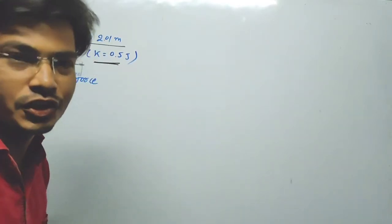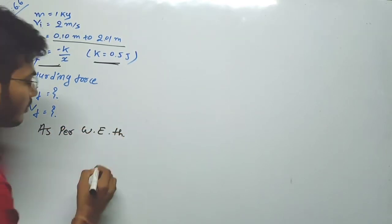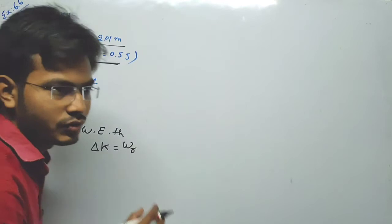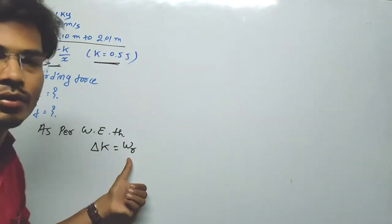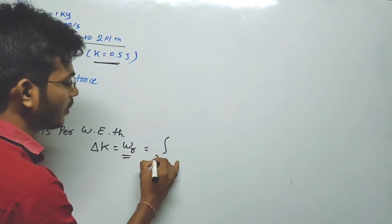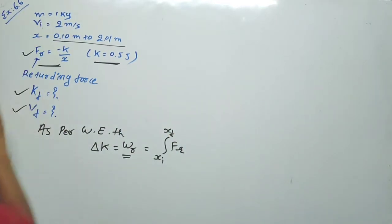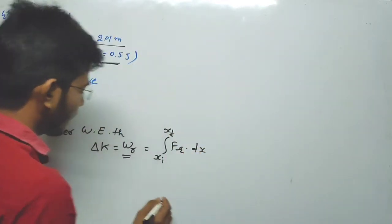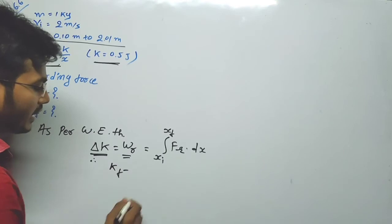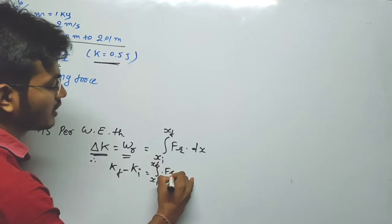As per the work-energy theorem, we know that ΔK = W_r, where W_r is the work done by the retarding force. So in place of W_r we can write the integral from x_i to x_f of F_r dx. Therefore, final kinetic energy minus initial kinetic energy equals the integral from x_i to x_f of F_r dx.